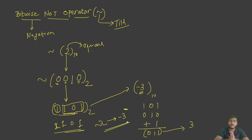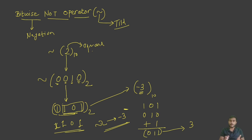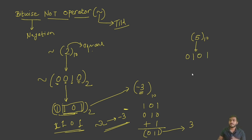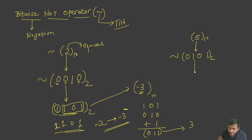Now let's look at one more example with the operand 5. Five is in decimal, so let's first convert it to binary. In 4-bit binary format, 5 looks like 0 1 0 1. Now applying the bitwise NOT operator to it, every 0 becomes 1 and every 1 becomes 0, so the result is 1 0 1 0.